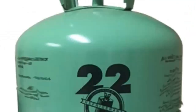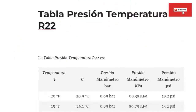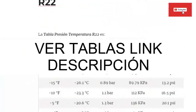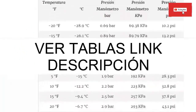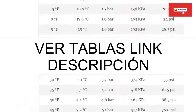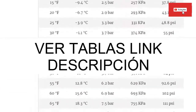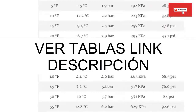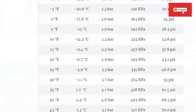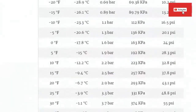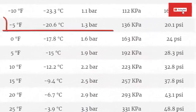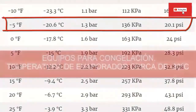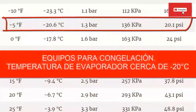R22 handles medium pressures. For a low temperature system — freezing to minus 20.5 degrees Celsius, approximately minus 5 degrees Fahrenheit — if we look in the table to reach this temperature in the evaporator, we need the equipment to mark a pressure on the low manometer of approximately 37.8 psi when turned on.